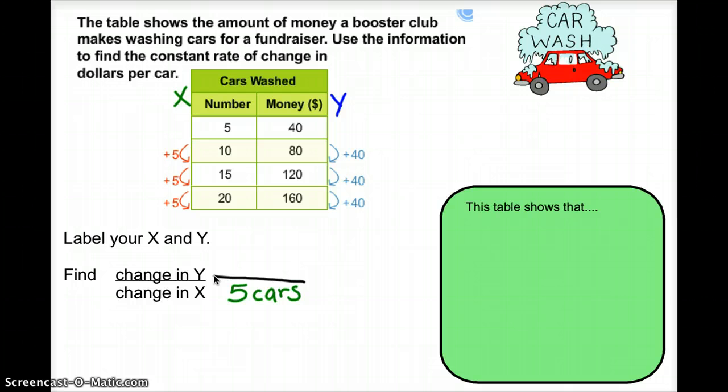And we see the change in y is the money earned. And if you look here, it's increased by $40. So, you would reduce this, which would turn out to be 8. We need to label it. We know it's $8 per car.